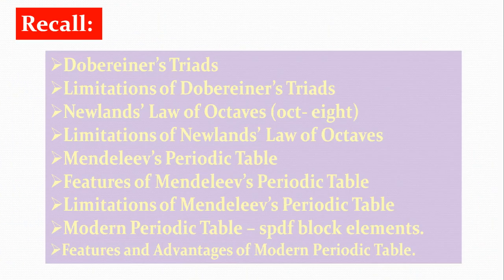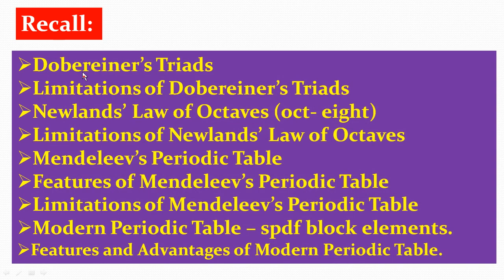Now let us recall what we learnt in the previous classes: Döbereiner's Triads and their limitations, Newland's Law of Octaves and their limitations, Mendeleev's Periodic Table, features of Mendeleev's Periodic Table and their limitations, and the Modern Periodic Table with its four blocks — S, P, D, and F block elements — along with the features and advantages of the Modern Periodic Table.